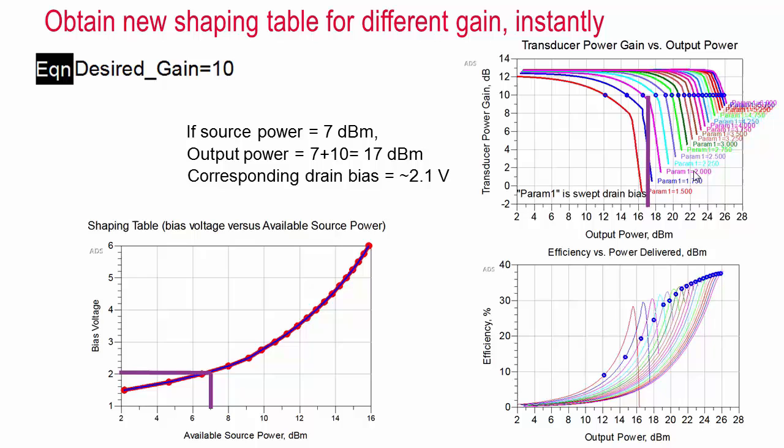Note that with the desired gain of 10 dB, the amplifier is operating further into compression and the efficiency is higher.